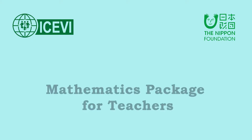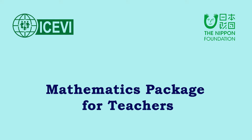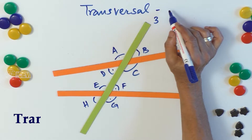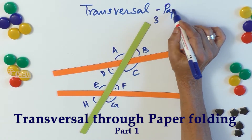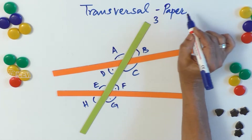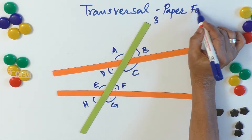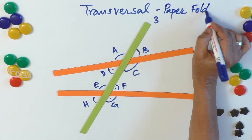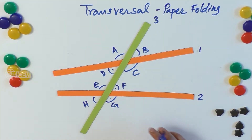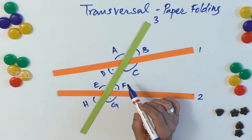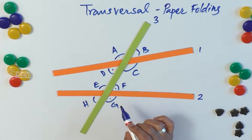This is the ICBI Nippon Foundation mathematics package for teachers. The title of this video is 'Transversal Through Paper Folding.' Before we take up the exercise, let us define a few more angles in continuation of the earlier video.